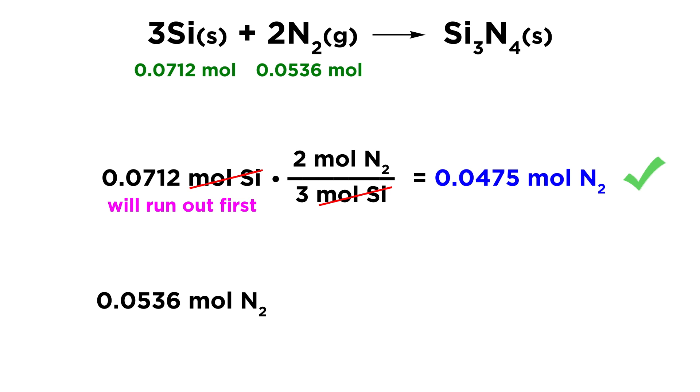Just to be thorough, let's go ahead and look at N₂. We have our moles of N₂. Let's see how much silicon would be needed for all of this nitrogen to react. So we're going to take our value, and we're going to multiply by 3 moles of silicon for every 2 moles of N₂. Once again, that's according to the stoichiometric coefficients in the balanced equation. Moles of N₂ will cancel, and we will get 0.0804 moles of silicon. Do we have enough silicon? We do not have that much silicon. We have less than that amount of silicon. So that means that the silicon will run out before all of the nitrogen has a chance to completely react.